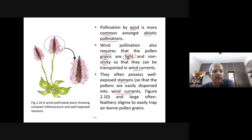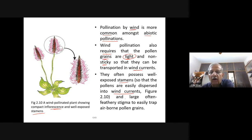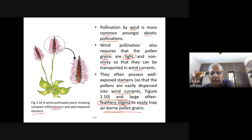Wind-pollinated plants often possess well-exposed stamens so that pollen is easily dispersed in wind currents, and large often feathery stigma to easily trap airborne pollen grains. The feathery stigma enables pollen grains to get alighted very easily when they pass through wind currents.